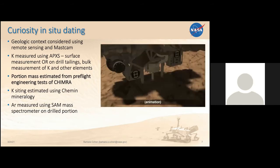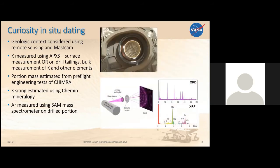We know that potassium can be sited in multiple different minerals in the bulk rock — it's a detrital system. So we do another step with that powder: we look at it in CheMin, which is an XRD instrument. The powder gets portioned through the sieve, dropped into CheMin, which does X-ray diffraction on it, and from that pattern you can see what minerals are there. You can make an educated guess about where your potassium is sited. Most of these rocks also have a significant portion of phyllosilicates — one of them has jarosite — so your potassium can be in multiple different phases, and we have to proportion that out based on the XRD.